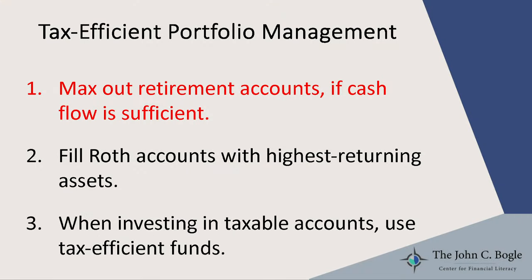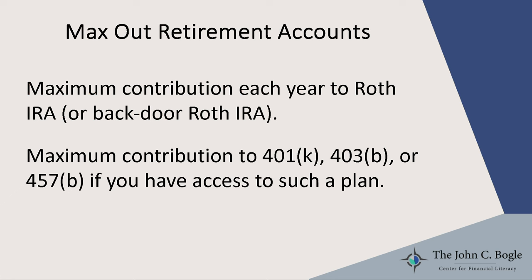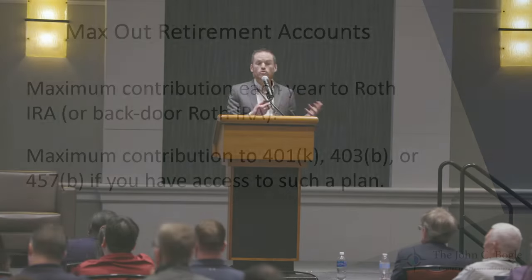Max out your retirement accounts. The idea here, generally speaking, is to make the maximum contribution every year to a Roth IRA — or if your income is too high, then we're looking at a maximum backdoor Roth IRA contribution if that's available to you. And if you have access to a plan at work and you have enough cash flow to max out that contribution as well, do that.